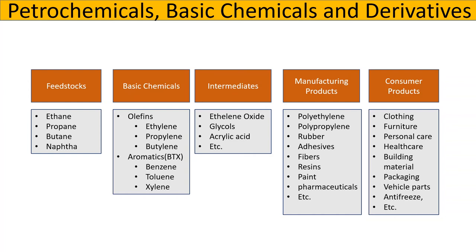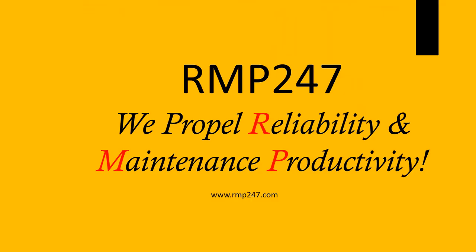I'm going to explain petrochemicals, basic chemicals, intermediates, manufacturing products, and chemical consumer products. Hey guys, I'm Ross with RMP 24-7. We Propel Reliability and Maintenance Productivity.